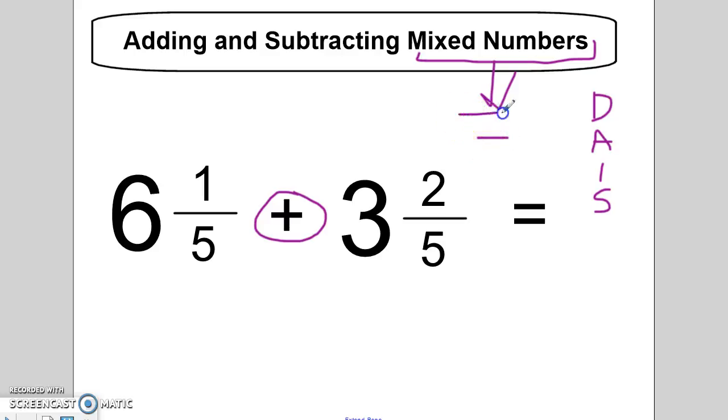And the type of fraction that we turn mixed numbers into are improper fractions. So I'm going to go ahead and I'm going to rewrite the problem, but instead of having the mixed numbers, I'm going to turn them into improper fractions. So I'm going to turn this mixed number into an improper fraction. This is an addition problem. And then I'm going to turn this mixed number into an improper fraction also.